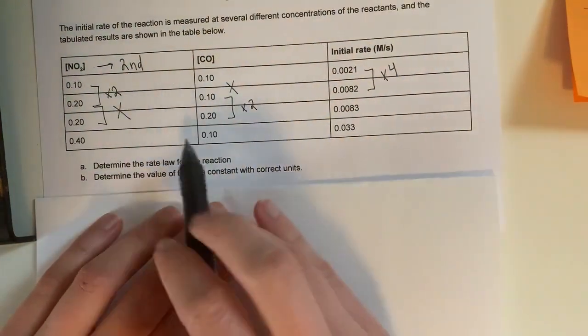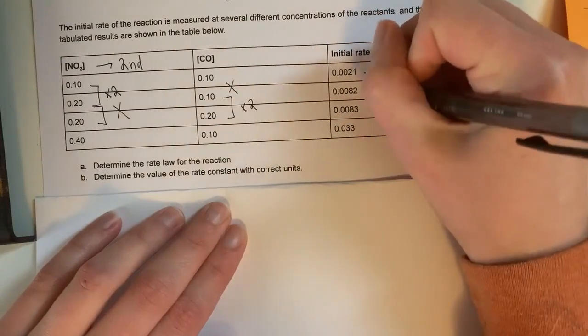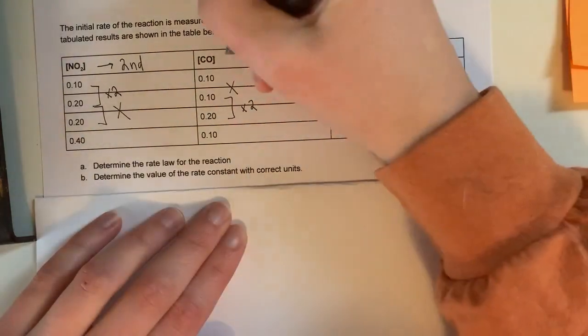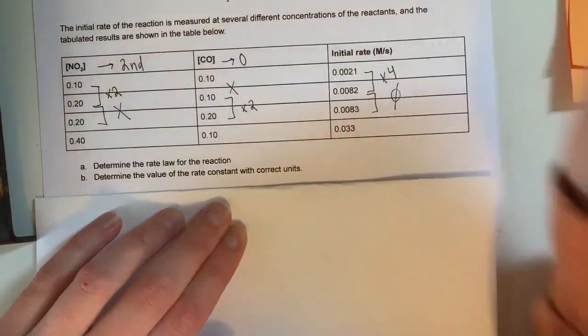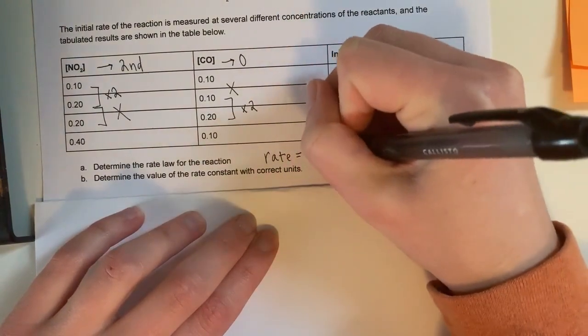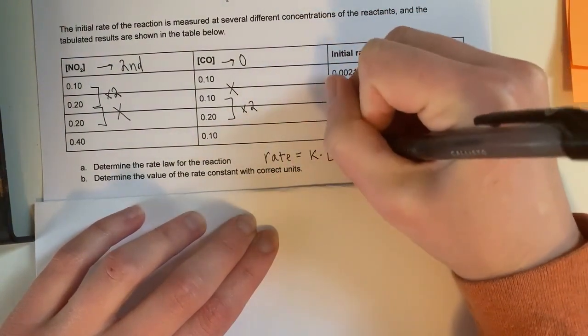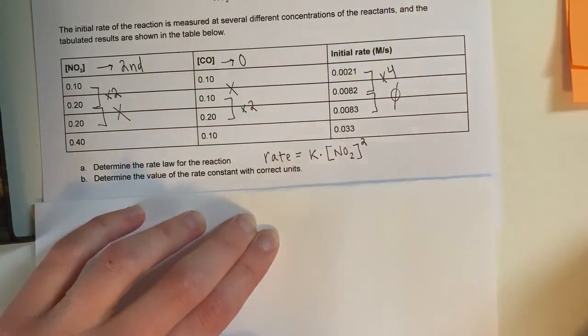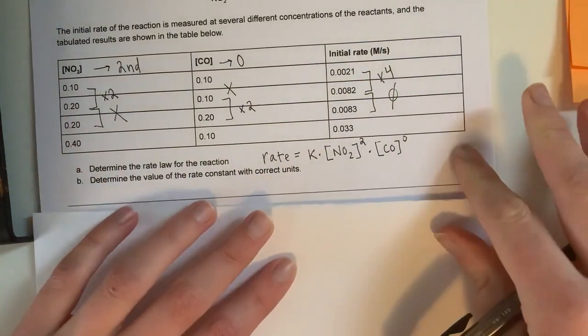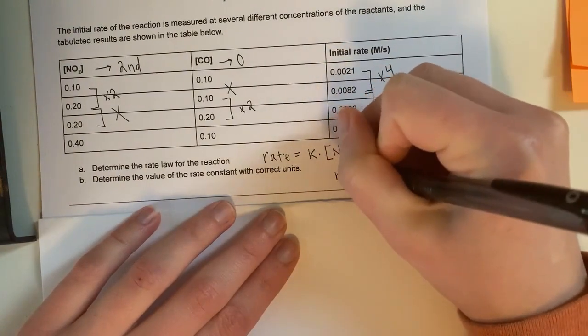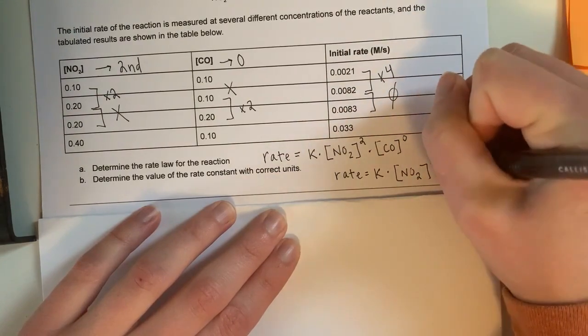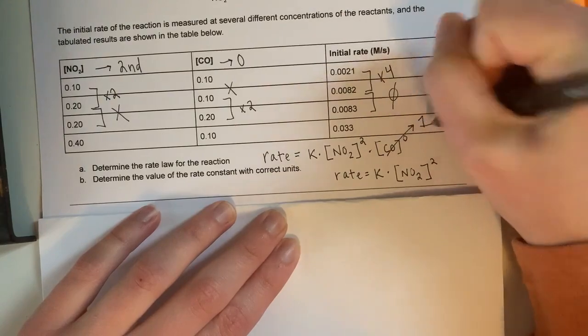And when I notice, when this doubles, and this stays the same, my rate has no change. So therefore, rate is not affected by CO, and this would be zero order. So therefore, I can write my rate law as rate equals K multiplied by NO2 squared multiplied by CO to the zero. And then sometimes, we can just leave out CO to the zero because rate is not affected by that substance. And this is pretty much anything raised to the zero is just one.